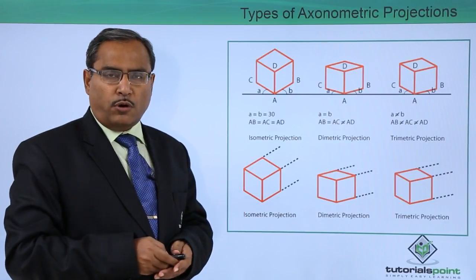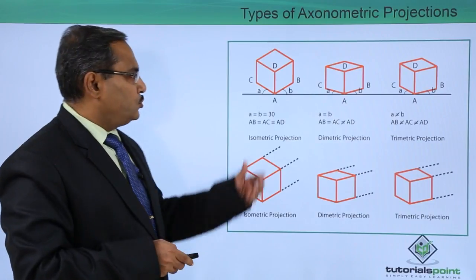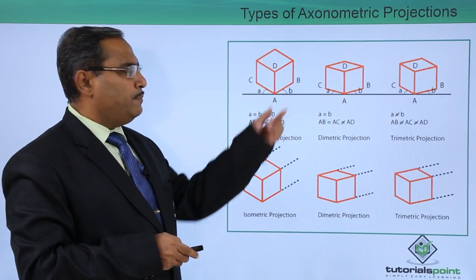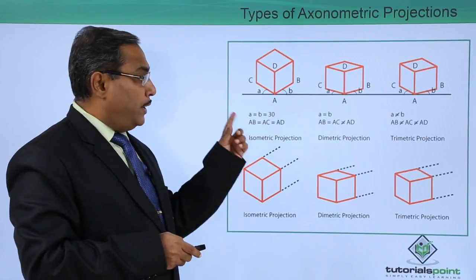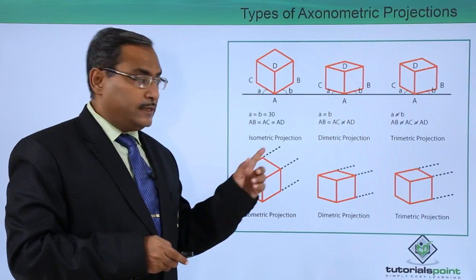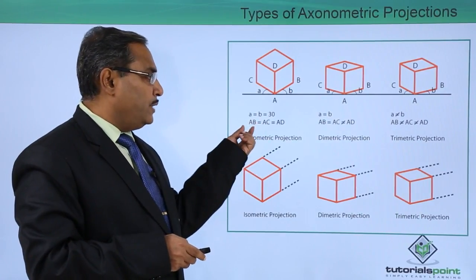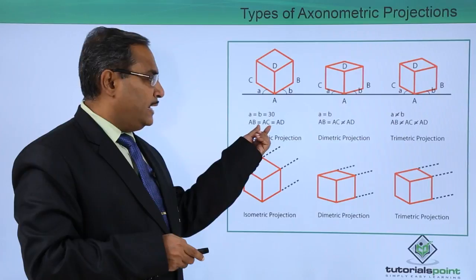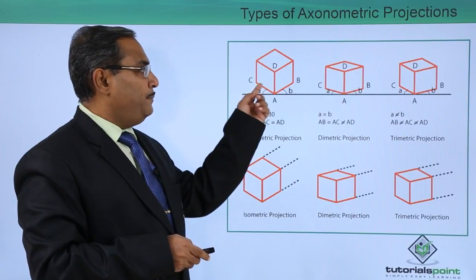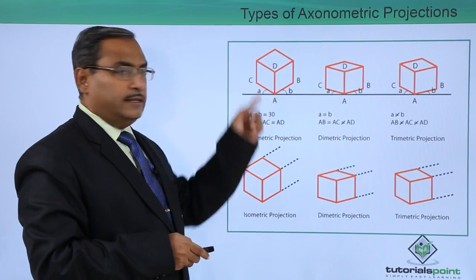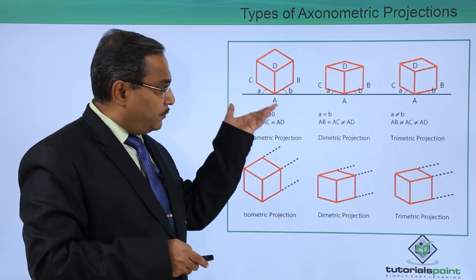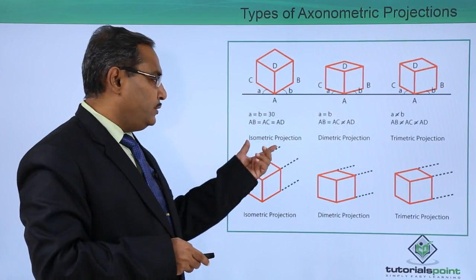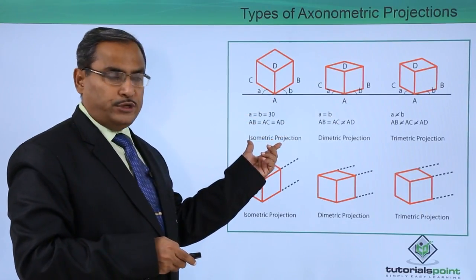I think it is better to go for this respective diagram. Here you see we are having angles A and B. When A is equal to B is equal to 30 degrees, then we are getting AB equal to AC equal to AD. These three sides are the same from this respective projection. Then it is known as isometric projection.